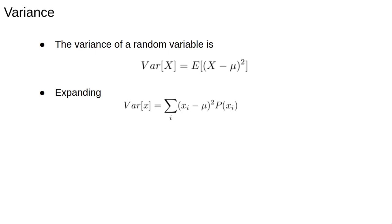The variance of a random variable is the expectation of the difference between the random variable and its expectation squared. Remember that we have n experiments and xi is the value of the random variable in each experiment. When we expand it out this should remind you of the definition of variance from the previous lecture except with extra factors of p of xi.